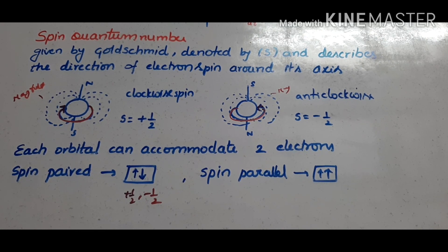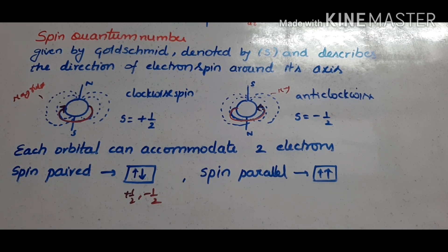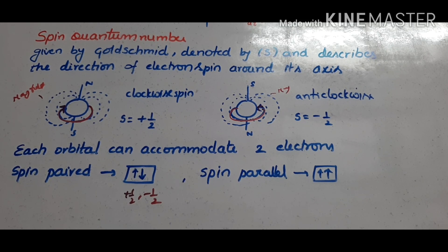This is all about the magnetic quantum number and spin quantum number. We now have four quantum numbers that together give the complete address of an electron in an atom — covering the shell number, angular momentum, orientation along the magnetic field, and spin. Dear students, if you find this helpful, please subscribe to my channel as it encourages me to make better videos for you. Thank you so much.